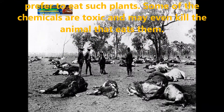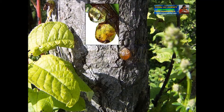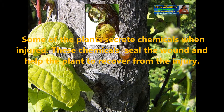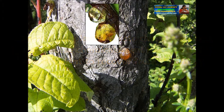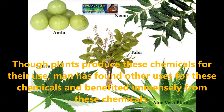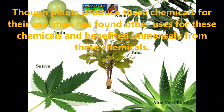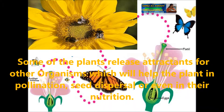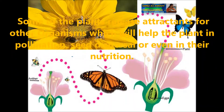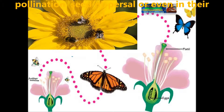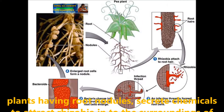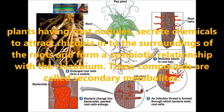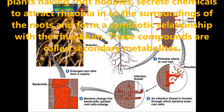Some of the chemicals are toxic and may even kill the animal that eats them. Some plants secrete chemicals when injured; these chemicals seal the wound and help the plant to recover from the injury. Though plants produce these chemicals for their own use, man has found other uses for these chemicals. Some plants also release attractants for other organisms, which help in pollination, seed dispersal, or even in their nutrition. For example, plants having root nodules secrete chemicals to attract rhizobia into the surroundings of the root and form a symbiotic relationship with the rhizobium.